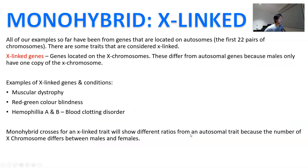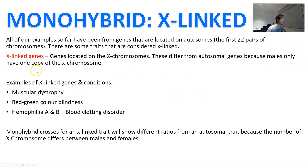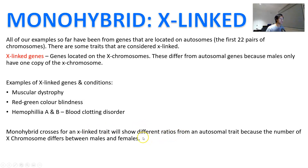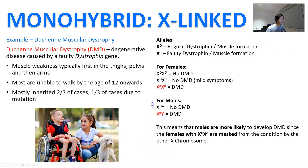Now let's look at what happens when the gene is not on an autosome — X-linked genes. All our examples so far are located on autosomes, which are the first 22 chromosome pairs. However, there are traits that are X-linked and present on the X chromosome. Males only have one copy of the X chromosome. Examples include muscular dystrophy, red-green color blindness, and hemophilia, which is a blood clotting disorder. A monohybrid cross for an X-linked trait will show different ratios from a standard autosomal trait because the X chromosomes differ between males and females.